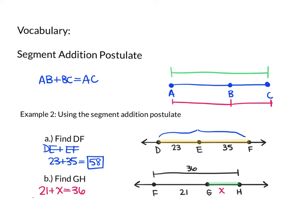And then it's just a matter of solving. Subtract 21 on both sides. So X, which is my missing segment, GH, should be equal to 15. 36 minus 21. My segment GH is 15. So again, the segment addition postulate basically says you can add the two parts to get the whole. Not too crazy.